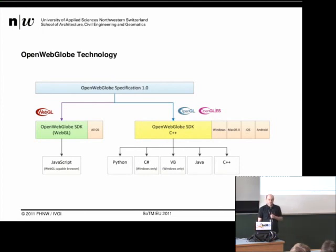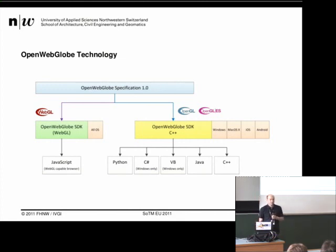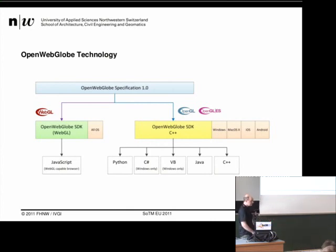On the other side, we have a C++ version with bindings. So we can use this SDK for Python, for C-sharp under Windows only, Visual Basic if you like, or Java and C++. We use OpenGL or OpenGL ES for the embedded version. But right now, because our resources are limited, we focus on the WebGL version. The C++ version will come out later this year as open source.